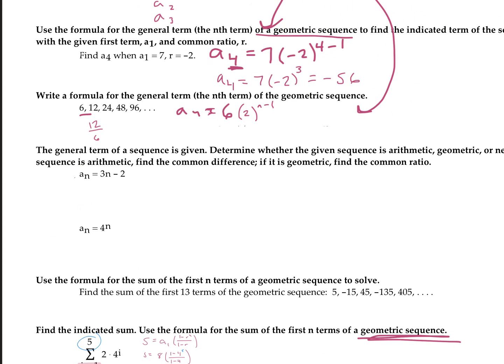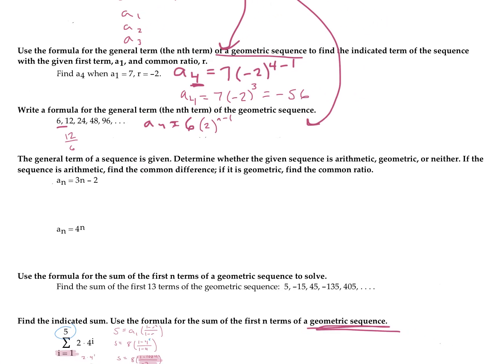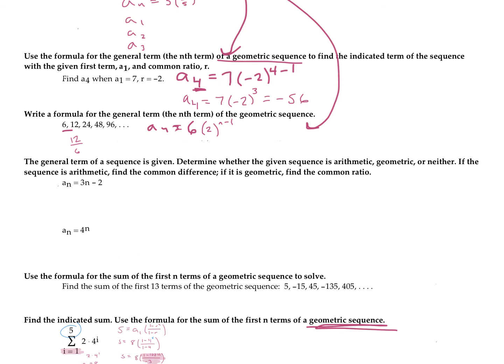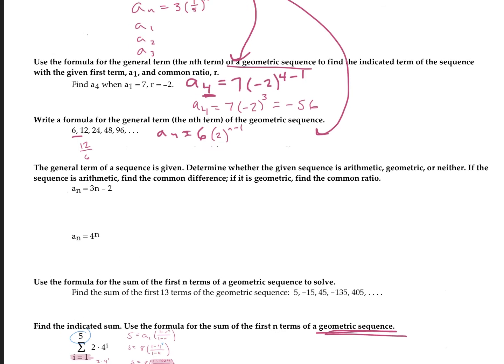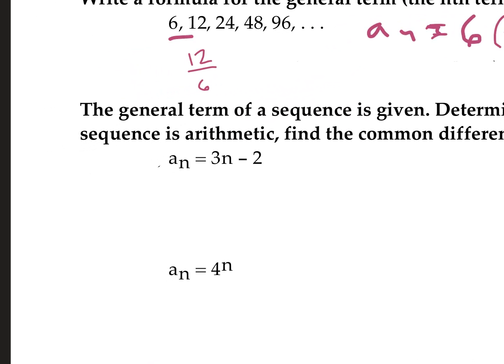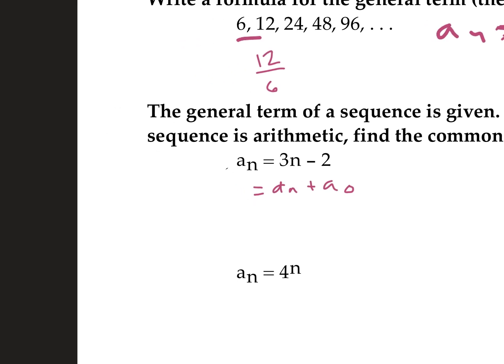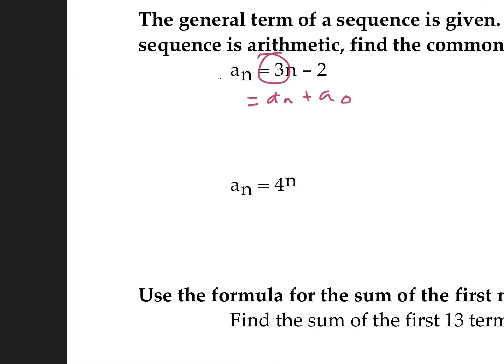The general term of the sequence is given — determine whether the sequence is arithmetic, geometric, or neither. If arithmetic, find the common difference; if geometric, find the common ratio. This one looks like our arithmetic formula: d times n plus a_sub_0 — so it is arithmetic, and our common difference is 3. The other one looks like our geometric formula because we have n in our exponent, and our ratio is 4.